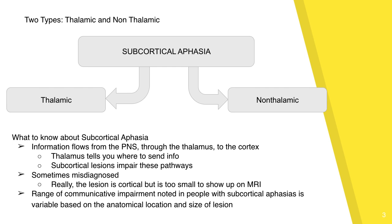Subcortical aphasia can be further categorized into two general types: thalamic and non-thalamic. There is a range of communication impairments noted in people with subcortical aphasias, so not every patient is going to look the same. This varies based on the anatomical location and the size of the lesion. In general, information moves from the PNS to the thalamus, which then directs it to the appropriate cortical area. A subcortical lesion is going to somehow impact one of these pathways.